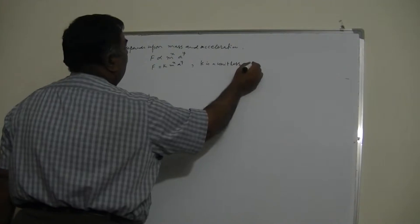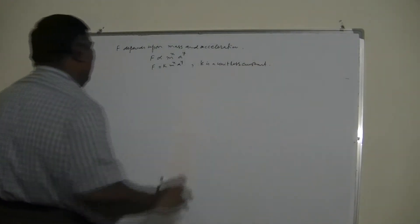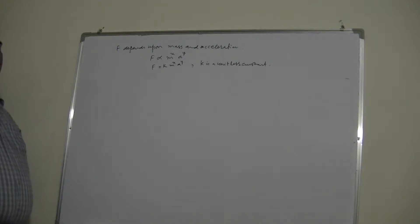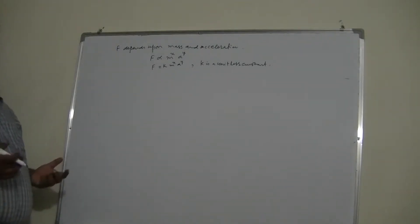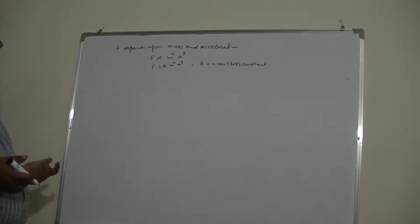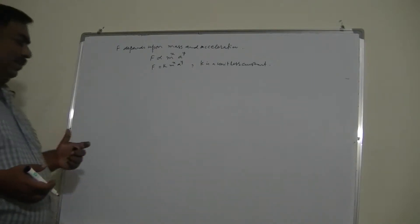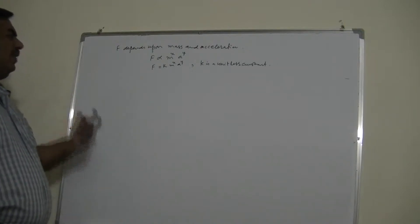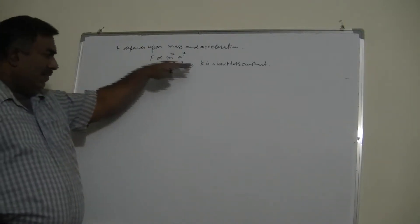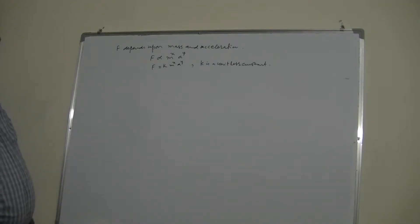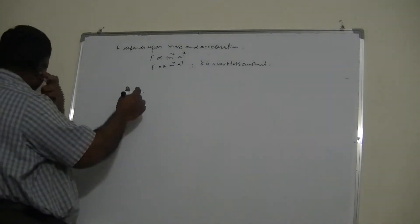Sometimes students think that every constant has no units — but there are so many constants which do have units. Acceleration due to gravity g is a constant with a unit. Newton's gravitational constant also has units. But here, while deriving these equations, whatever constants appear will have no units.